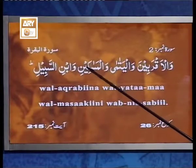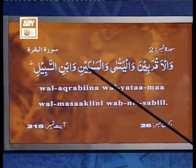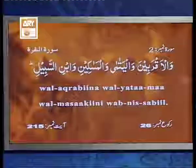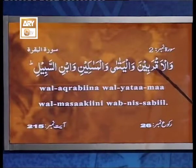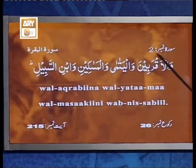حروف مستعلیہ جن کا مجموعہ 'خُصَّ ضَغْطٍ قِظْ' ہے، انہیں ہمیشہ پر کر کے پڑھا جاتا ہے۔ اس کے مقابل کاف (ڈنڈی والا) ہے — جیسے والمساکینی میں سین کے بعد والا کاف — اسے ہمیشہ باریک پڑھتے ہیں۔ اس کا مخرج زبان کی جڑ اور تالو کا سخت حصہ ہے۔ دو نکتوں والے قاف اور ڈنڈی والے کاف میں مخرج کا بھی فرق ہے اور صفاتی فرق یہ کہ ایک پر اور دوسرا باریک — انہیں مختلف المخارج اور مختلف الصفات کہا جائے گا۔